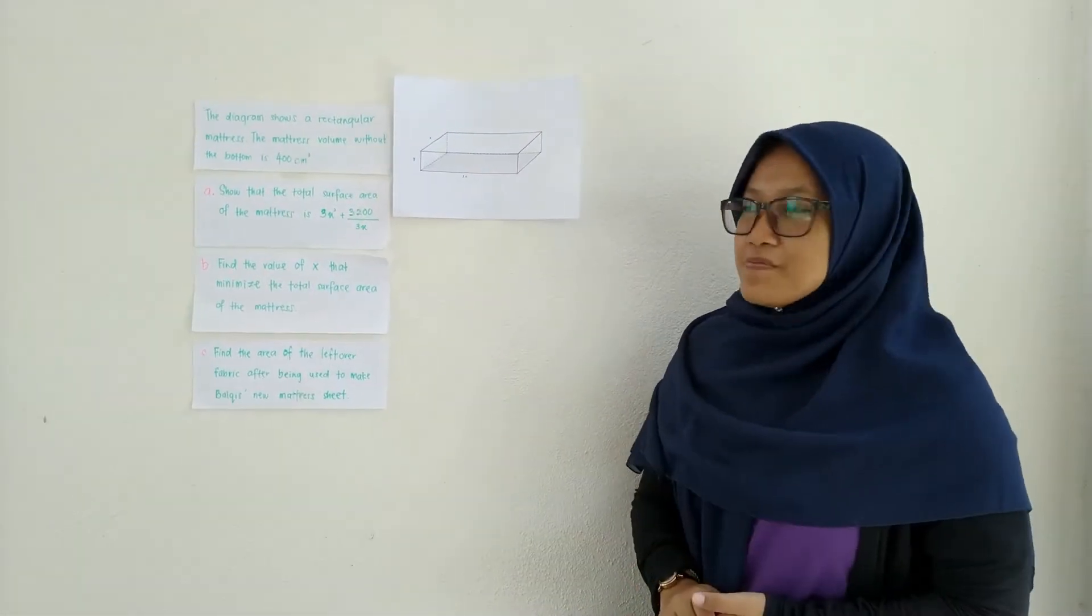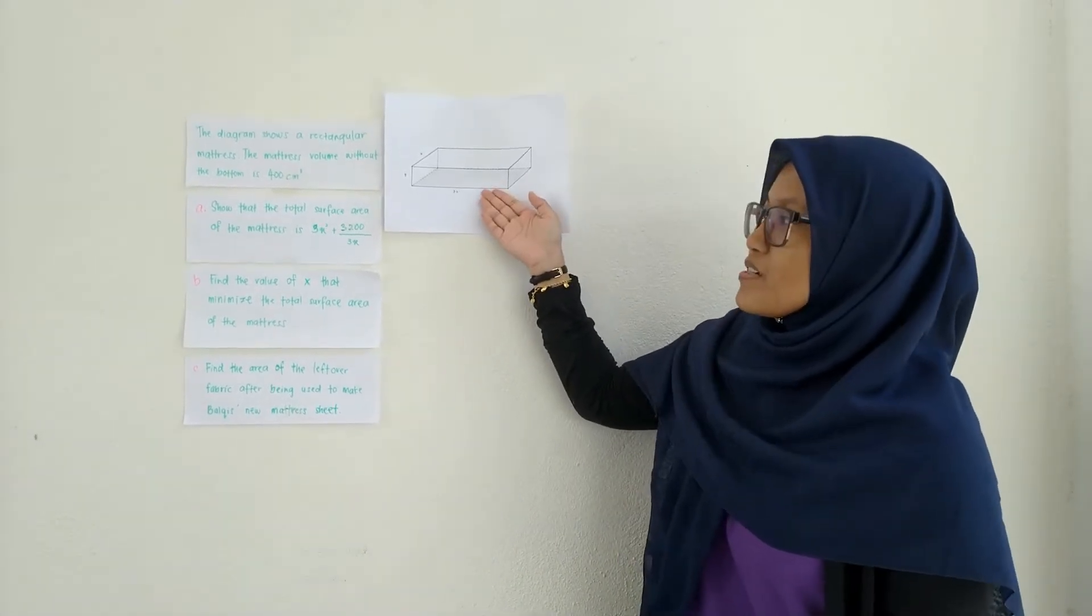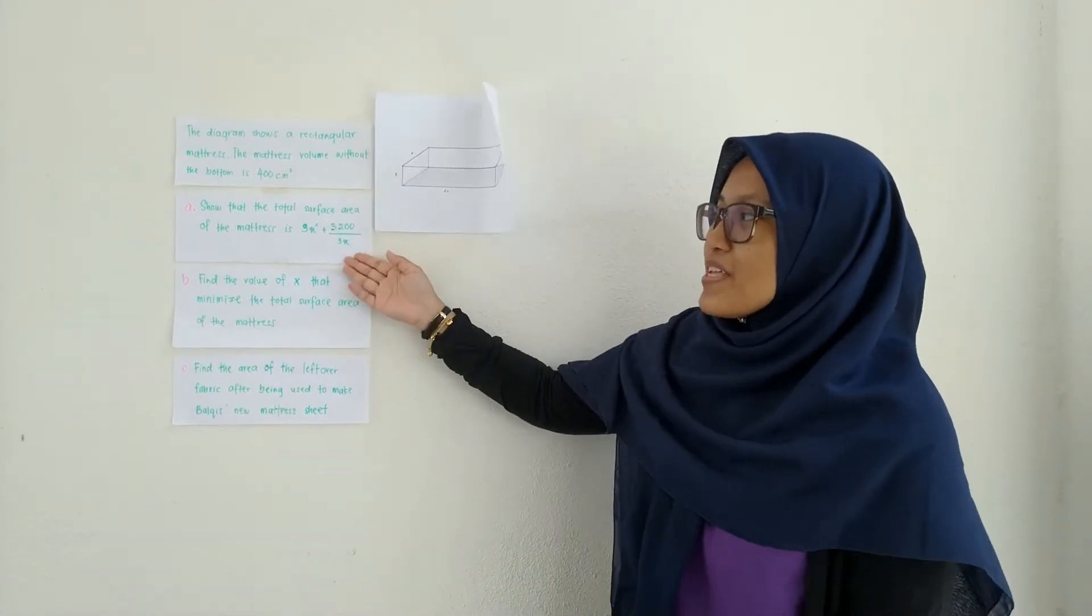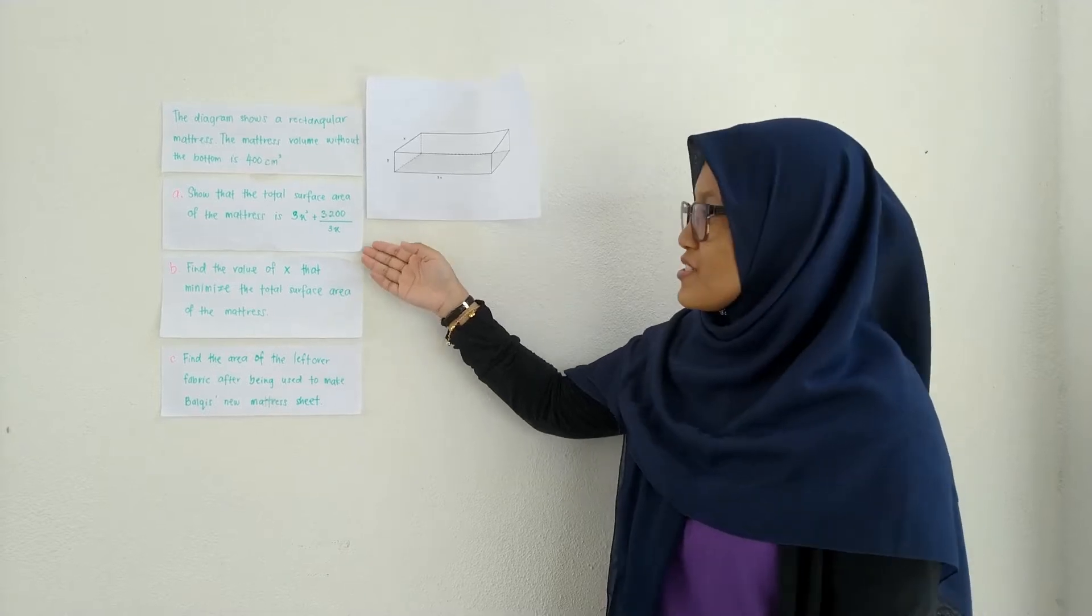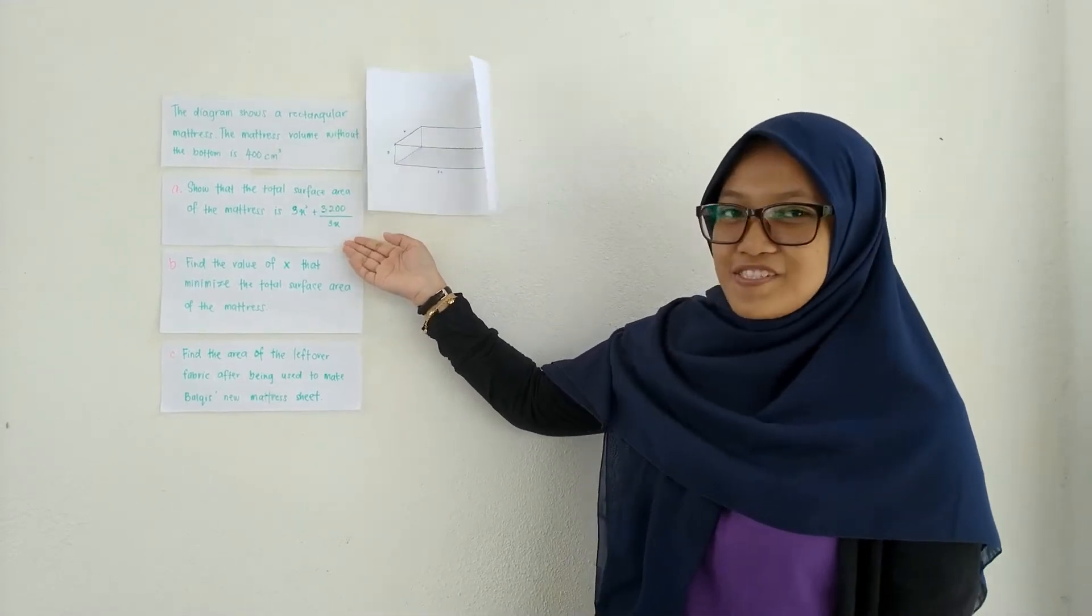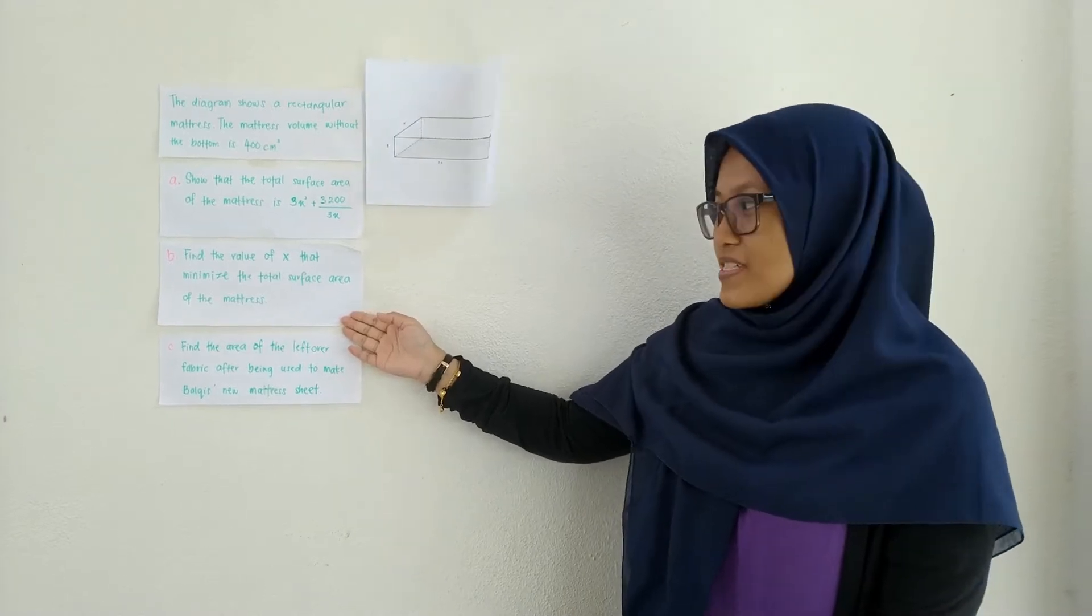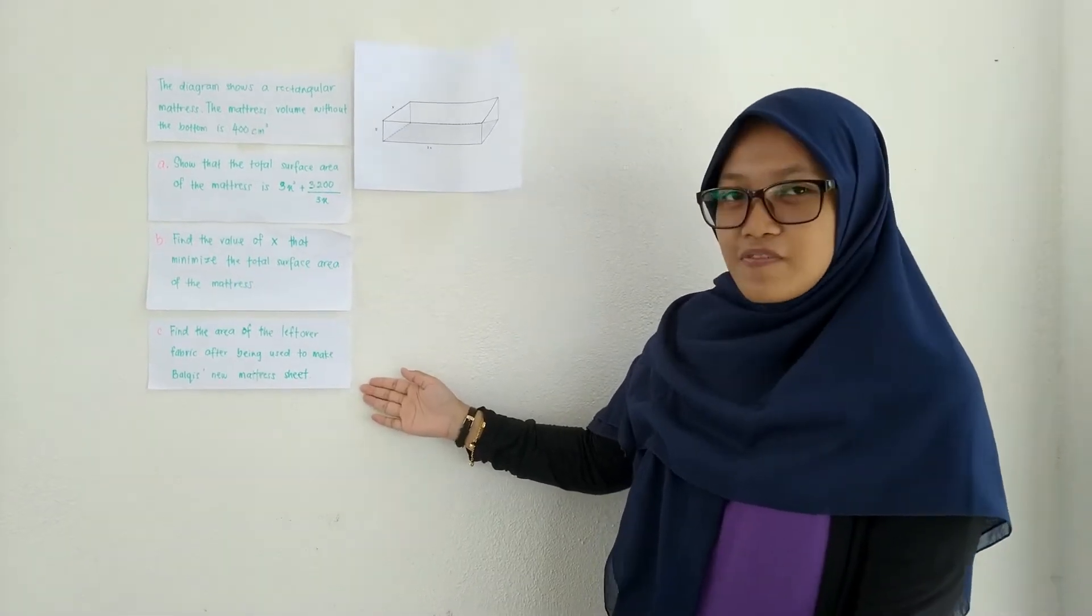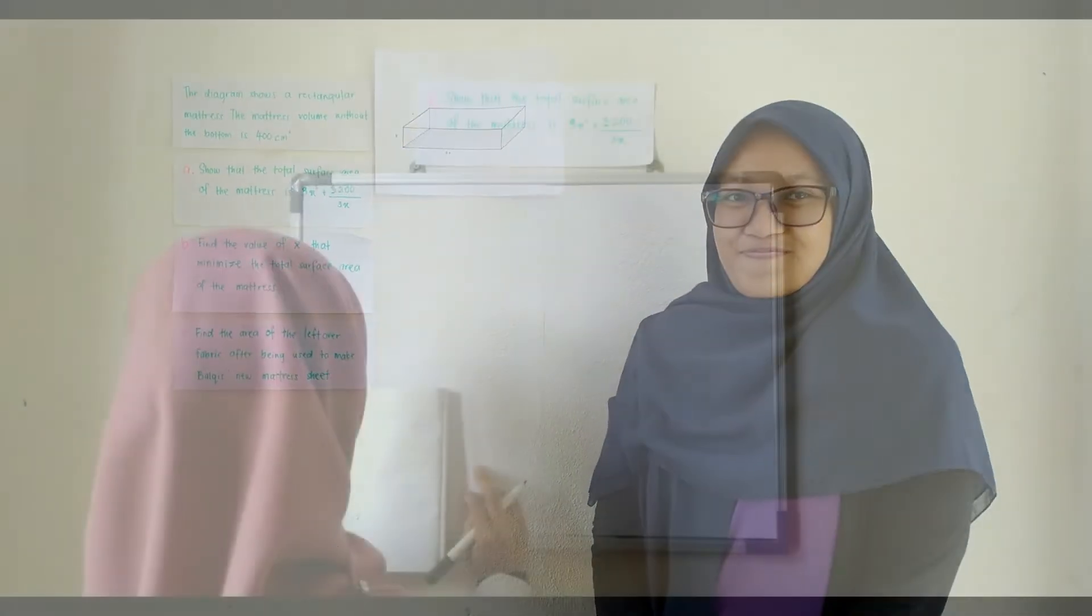Moving on into a mathematical form, the driver chooses a rectangle mattress. The mattress volume at the bottom is 400 cm squared. So, A, show that the total surface area of the mattress is 3x squared plus 3200 over 3x. B, find the value of x that minimizes the total surface area of the mattress. And C, find the area of the leftover fabric after being used to make this new mattress.